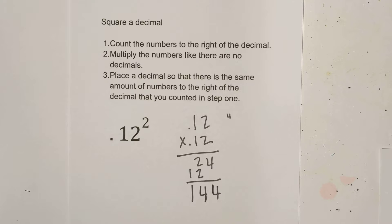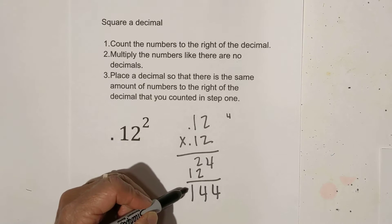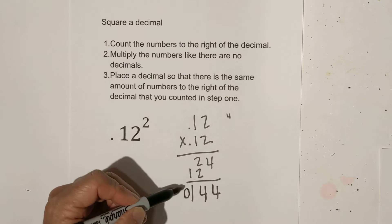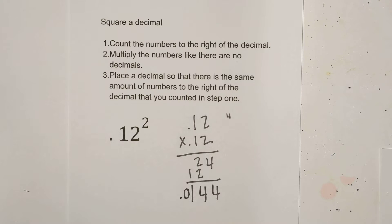Now we need four numbers to the right of the decimal. So we have one, two, three — I'll add a zero — put the decimal there. So there is twelve hundredths squared.